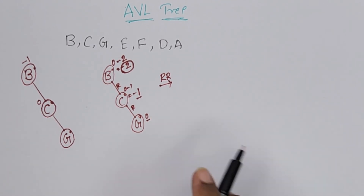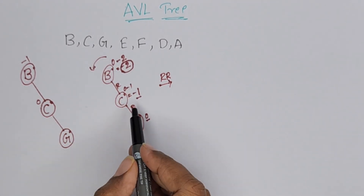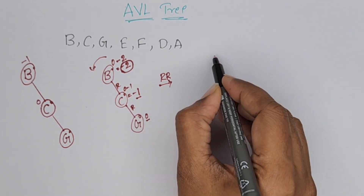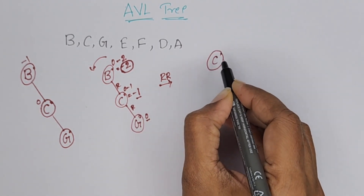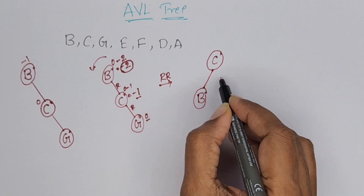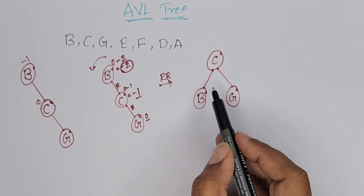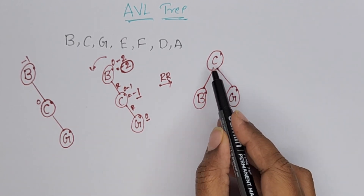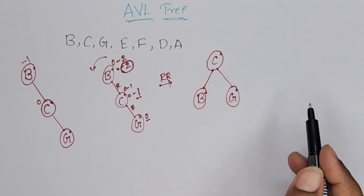RR rotation means we have to rotate left side. When you rotate left side, the middle one becomes root. C becomes root. C left is B and right of C is G. Again, if you write balance factors: 0, 0, 0. For C also, 1 minus 1 it is 0. Now it is balanced.